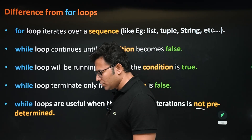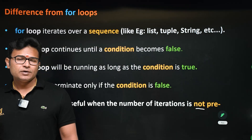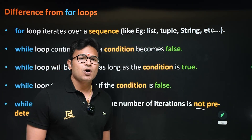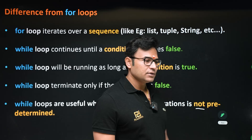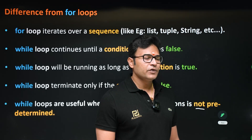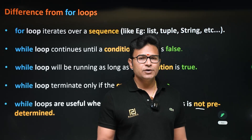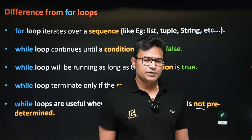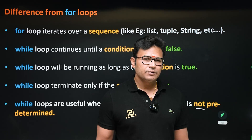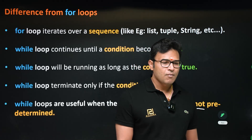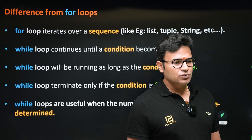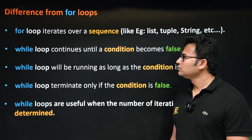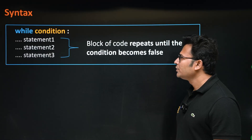While loops are useful when the number of iterations is not predetermined — meaning if you don't know in advance how many times you have to run the loop, while loop will be very helpful. For loop is mainly meant for iterating over collections like list, tuple, dictionary, string. While loop is generally used to iterate based on a condition, whether it is true or false.